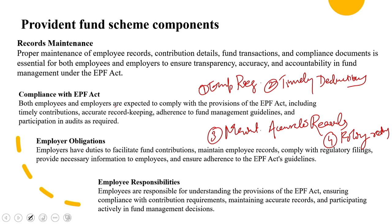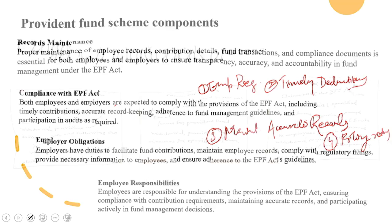Employers should implement efficient processes for deductions, deposits, and record keeping to minimize errors and ensure timely processing. Leveraging payroll software with built-in EPF functionalities can significantly streamline the process and reduce administrative burden. Employers should also be proactive in addressing challenges such as employee awareness or navigating complexity. These are some of the critical aspects concerning the Provident Fund scheme and its different components.